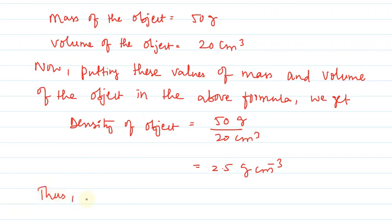Thus, the density of object is 2.5 gram per centimeter cube hai.